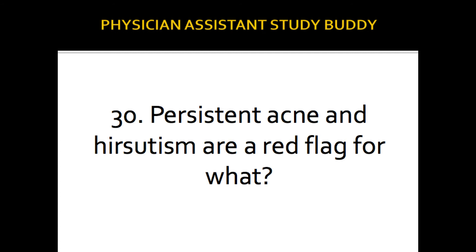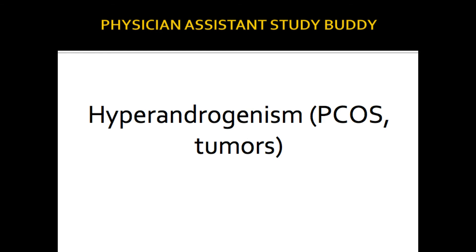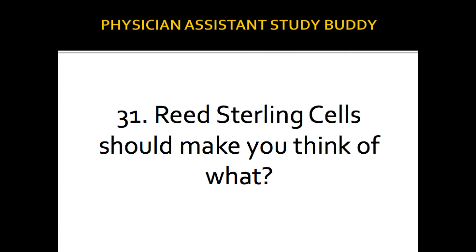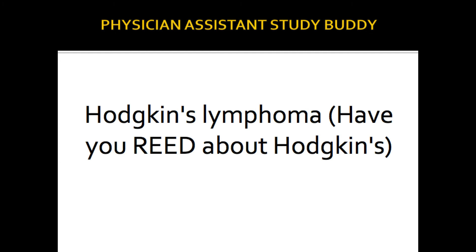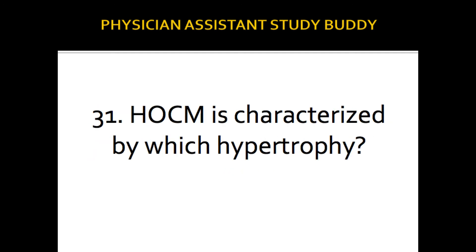Persistent acne and hirsutism are red flags for what? They'll tell you about a young adolescent female with persistent acne and you notice hirsutism — these should be red flags for hyperandrogenism, PCOS, or tumors, and should prompt you to do further testing. Reed-Sternberg cells should make you think of Hodgkin's lymphoma. I remember: 'Have you read about Hodgkin's?' — Reed → Hodgkin's lymphoma.